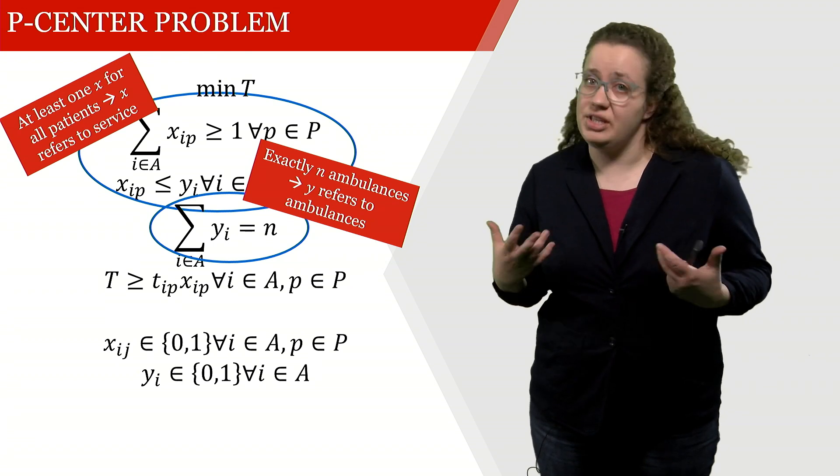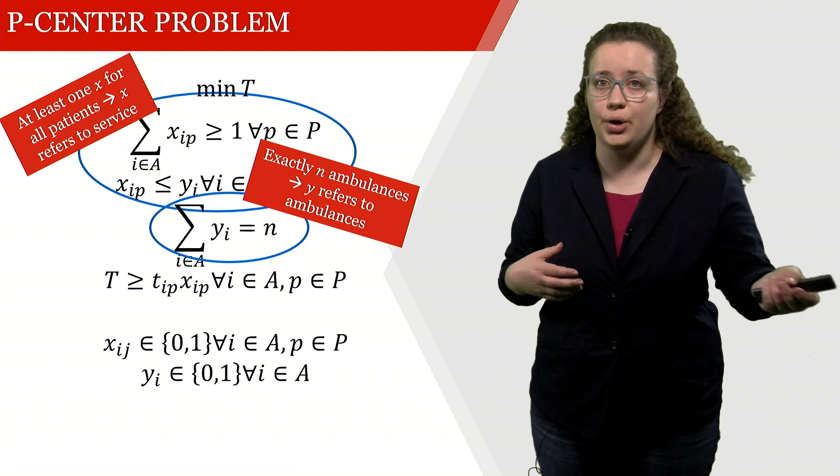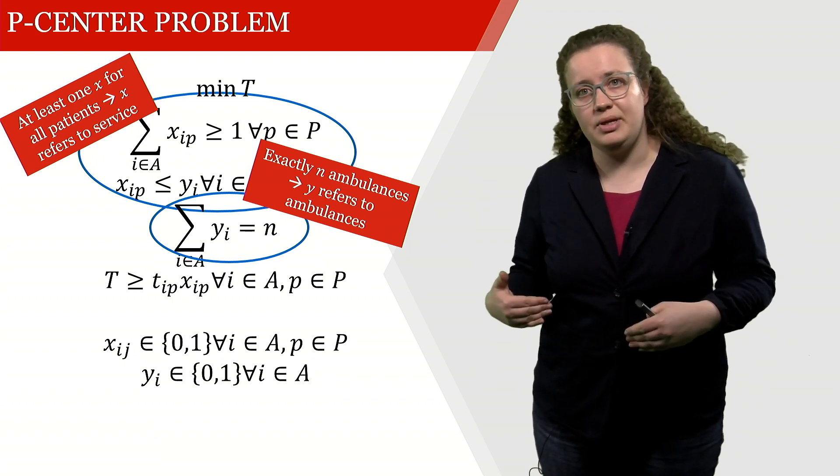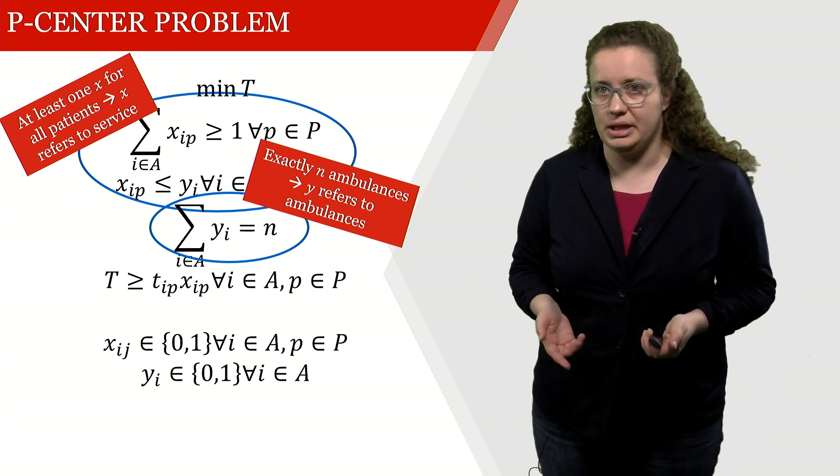So now we know what the decision variables are. So x refers to the flow between the ambulance station and the patient location while y refers to the opening decision.